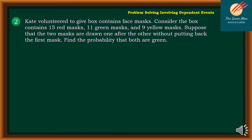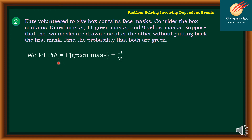Moving to problem number 2 — from example 1. Kate volunteered to give box-contained face masks; the box contains 15 red masks, 11 green masks, and 9 yellow masks. Suppose two masks are drawn one after another without putting back the first mask. Find the probability that both are green. This is known as probability without replacement. The probability of A — drawing a green mask — is 11 out of 35.